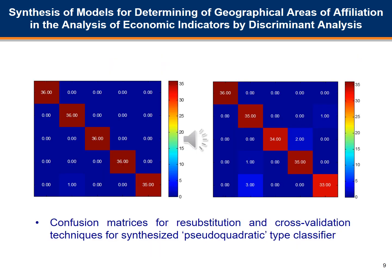In connection with one of the models with the best quality indicators — specifically the pseudo-quadratic discriminant classifier — matrices of the correct and incorrect classifications were formed.